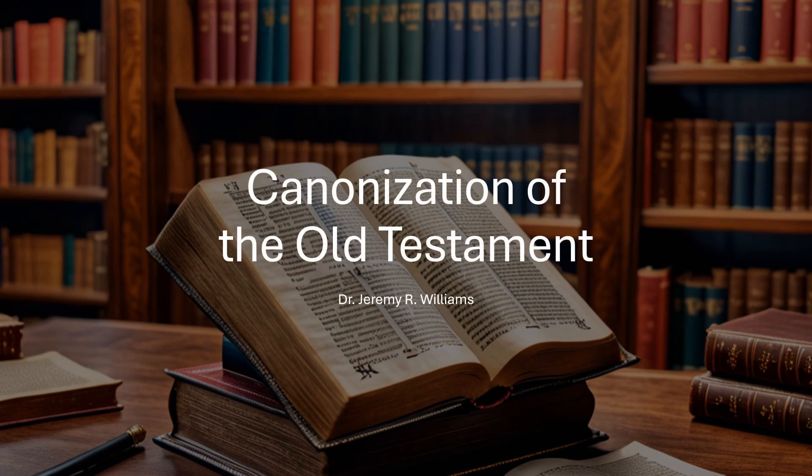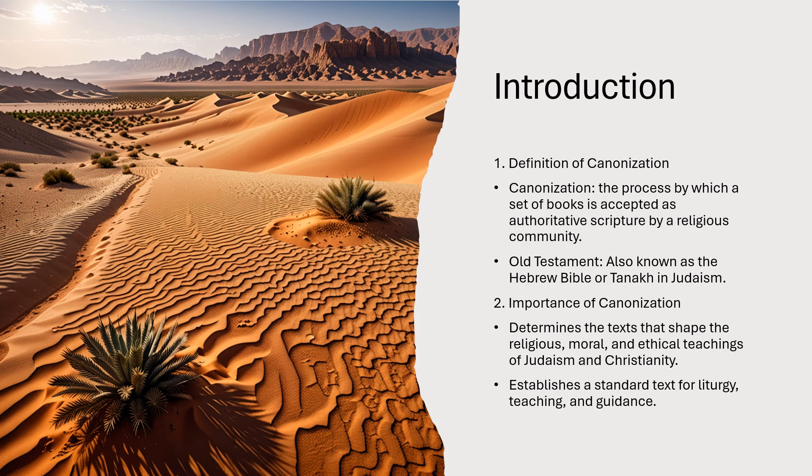Today we're going to look at the canonization of the Old Testament. I wanted to go through this lecture because it's important to understand when all these things came together. The Old Testament as we have it today was written over a period of several hundred years — depending on who you talk to, it could be as many as 2,000 or 3,000 years. These books came together as one book in the Old Testament, which is 39 books altogether.